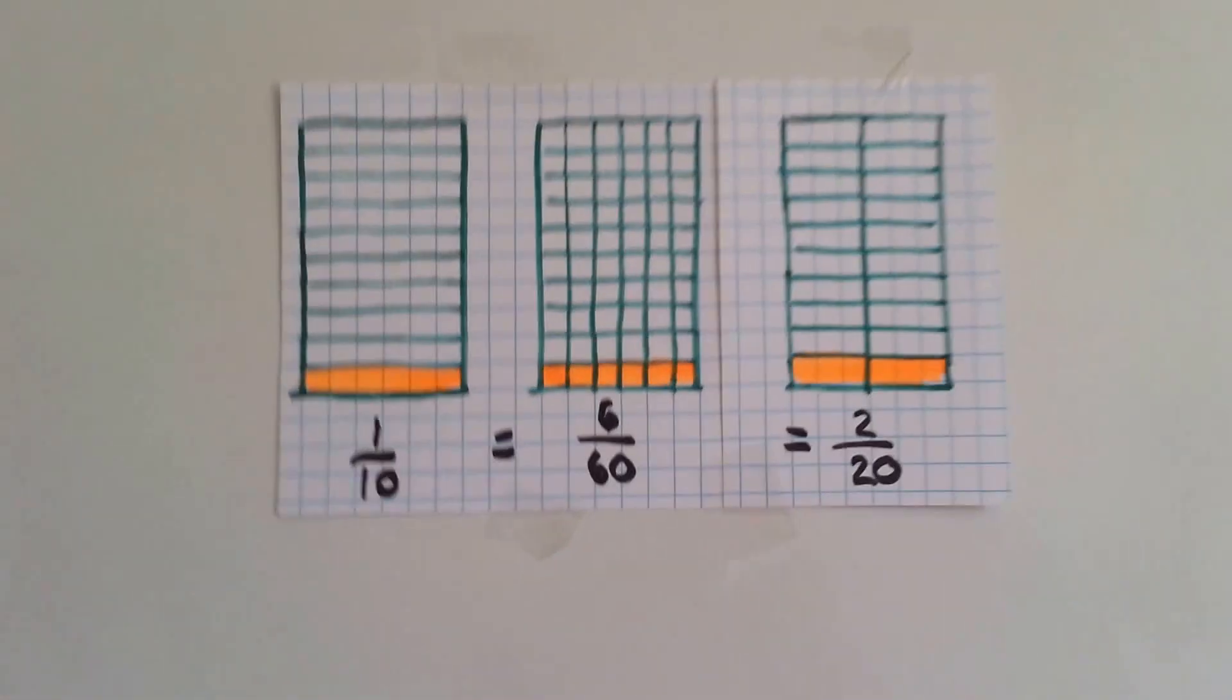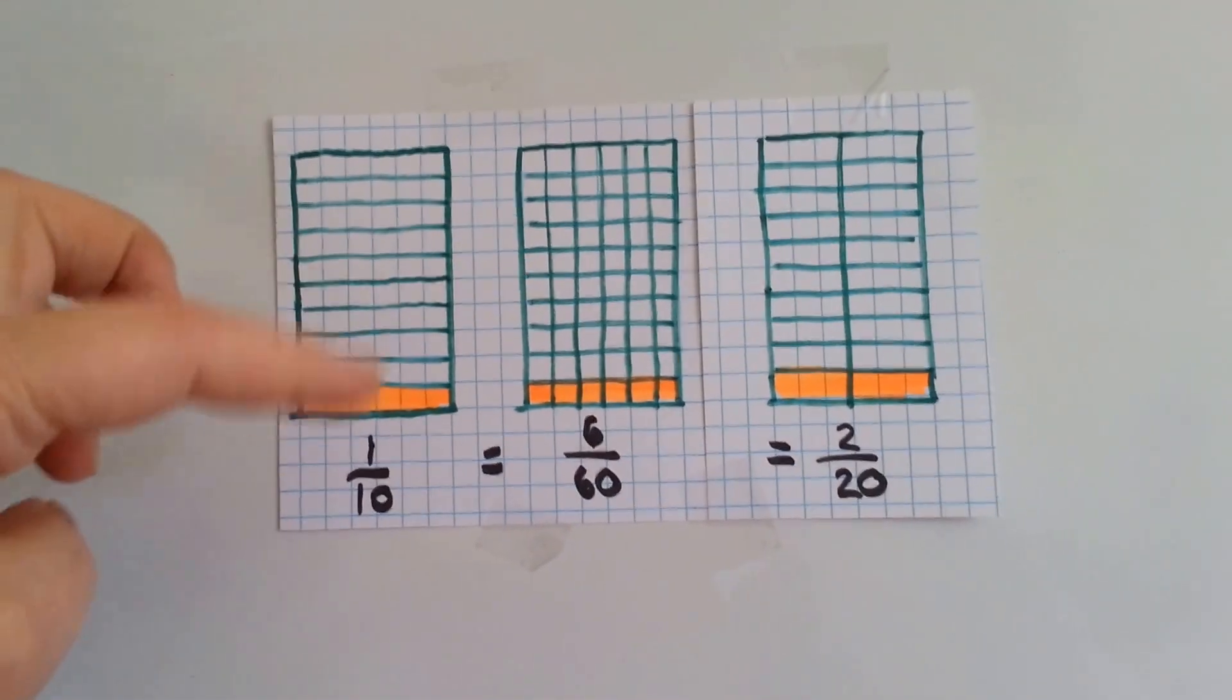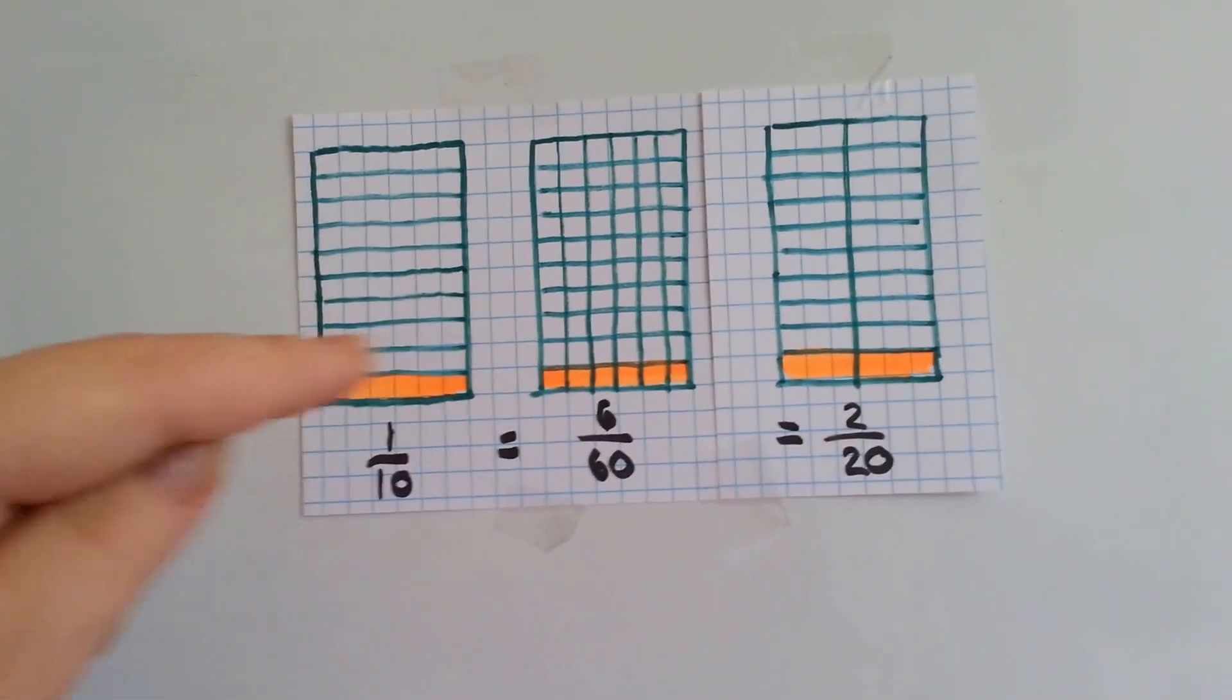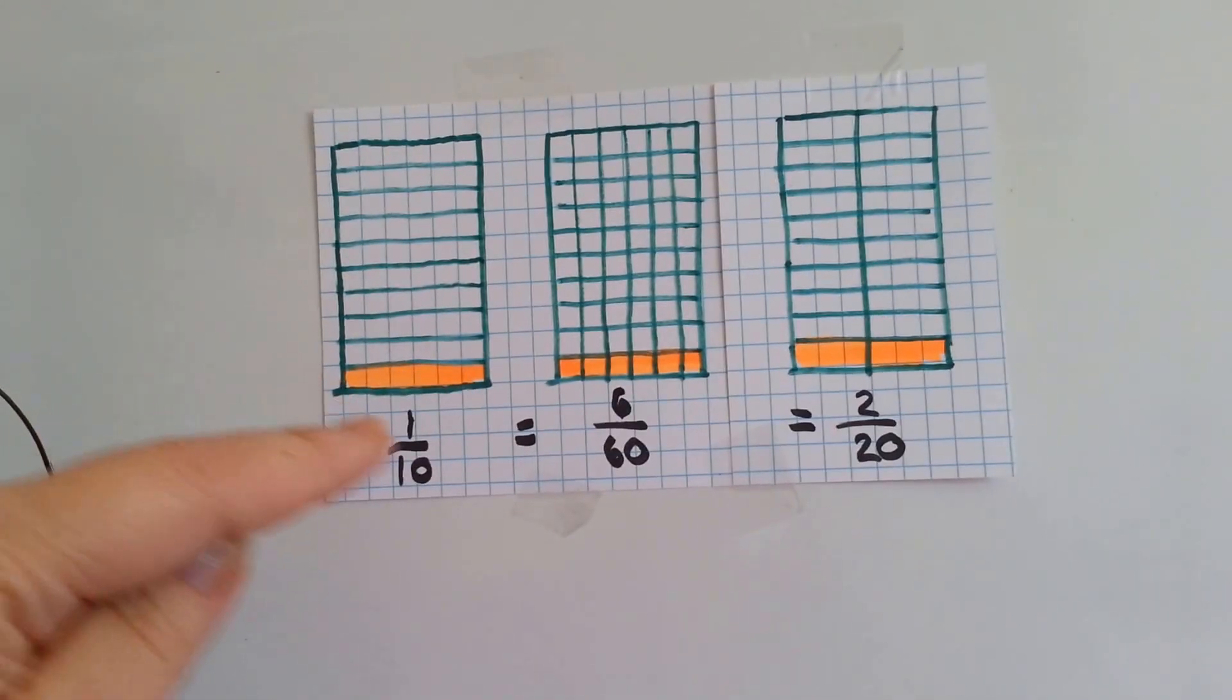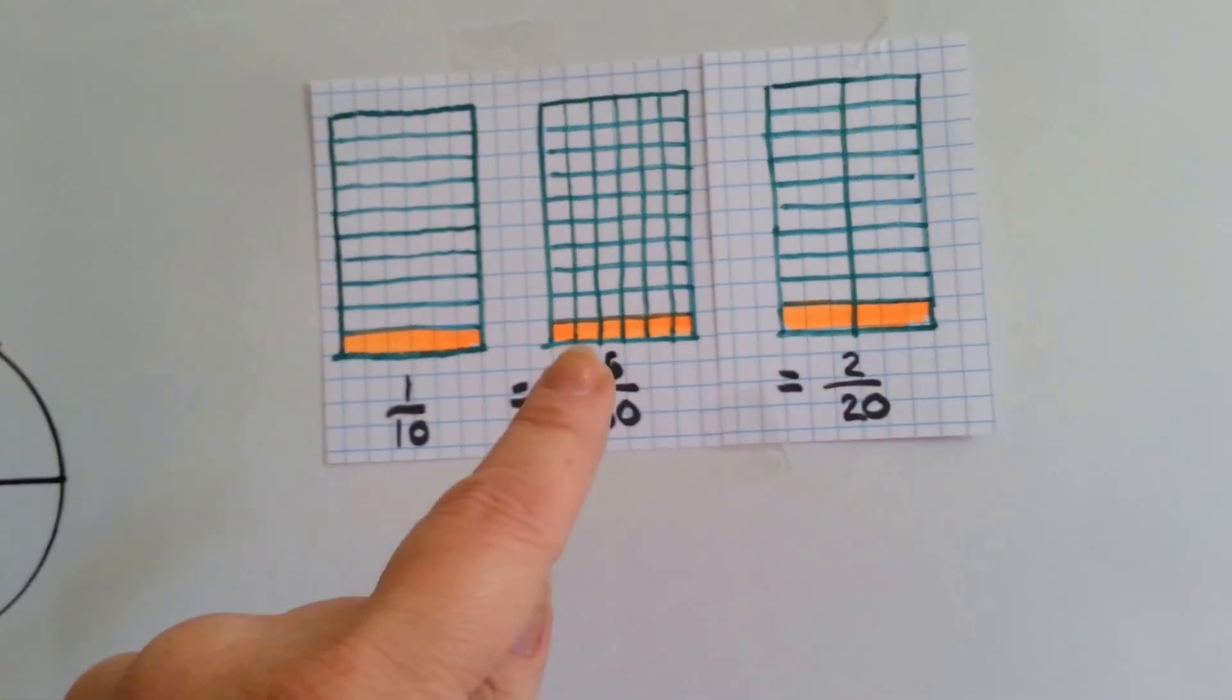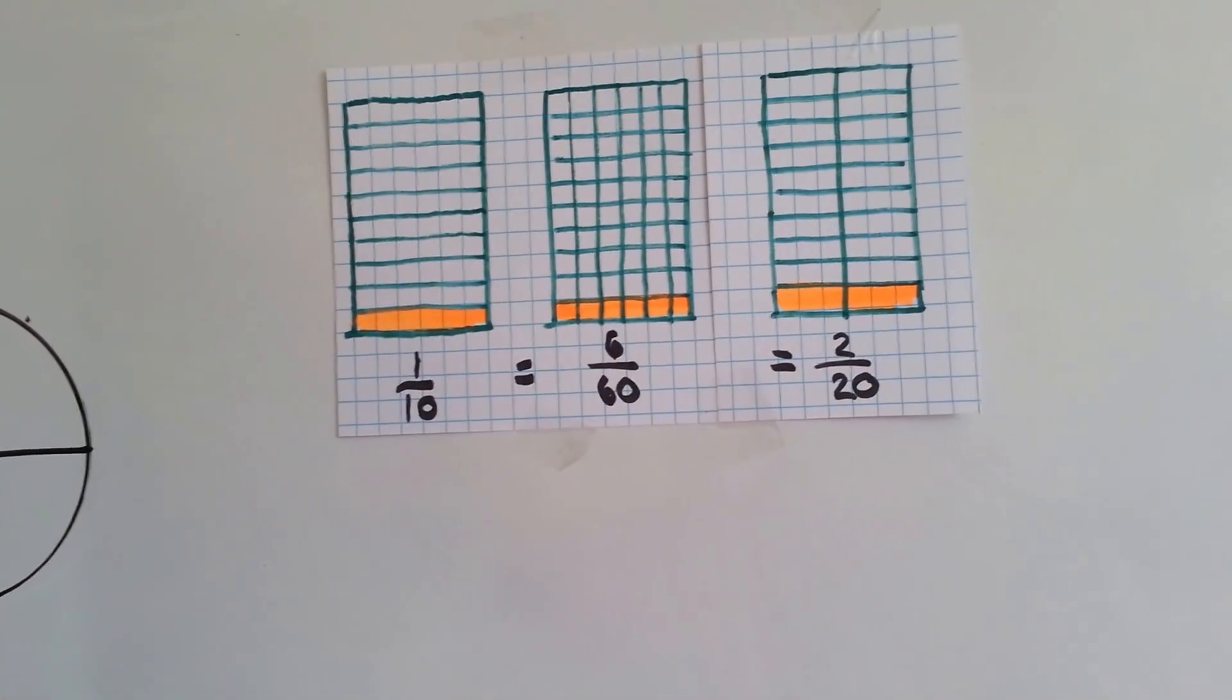Now, I want you to look at this. I've got this graph card paper here, and this box is split into ten pieces, going this way. And one of the ten pieces is colored orange. This box is cut into sixty squares, and six of them are colored orange. But they're equal, because one tenth is equal to six sixtieths.